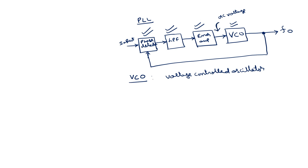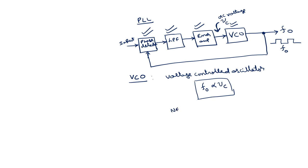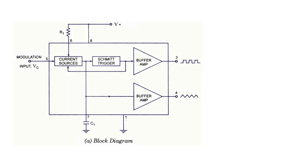The input for the VCO is the DC control voltage, and the output is a waveform whose frequency varies with this DC voltage — the VCO frequency is proportional to the control voltage VC. To derive the relation between F0 and VC, we will consider the block diagram of the VCO available in IC form as the NE566. This is an IC which performs the VCO operation.